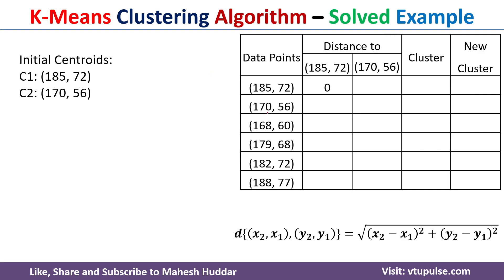Similarly, the distance between the second data point and the first initial centroid is square root of (185 - 170)² + (72 - 56)², which is equivalent to 21.93. We will calculate the distances from the remaining data points to the first centroid in the same way.